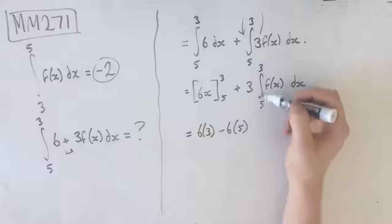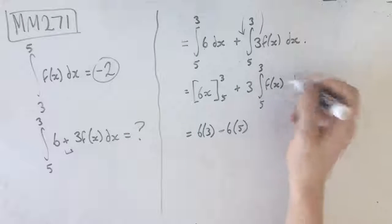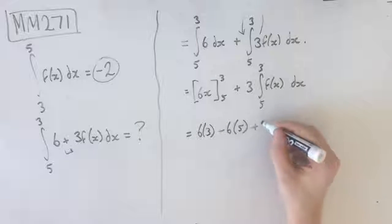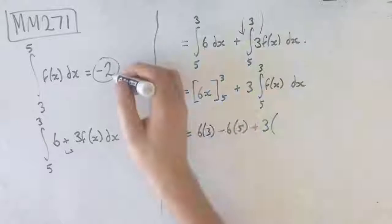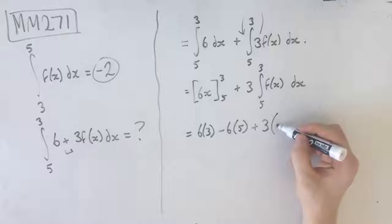Because when we swap terminals, we get the negative version of that, which means we get plus 3 times the negative version of this, which is just 2.